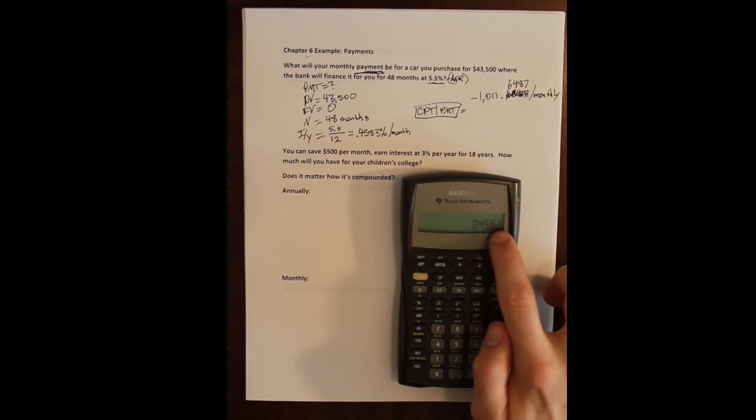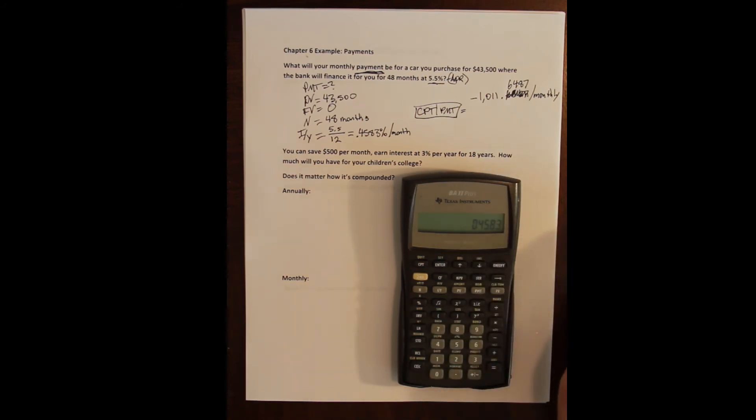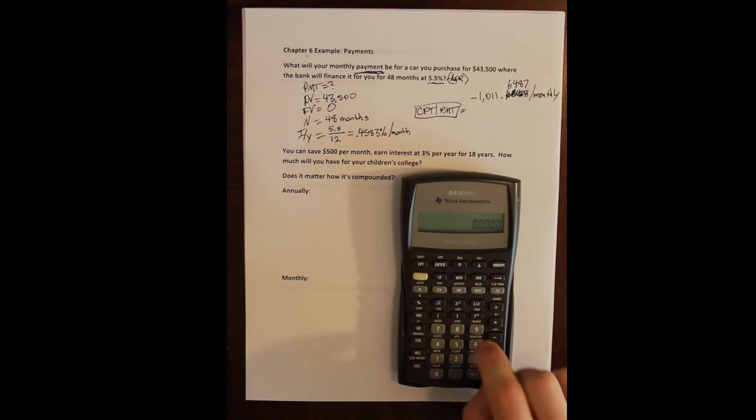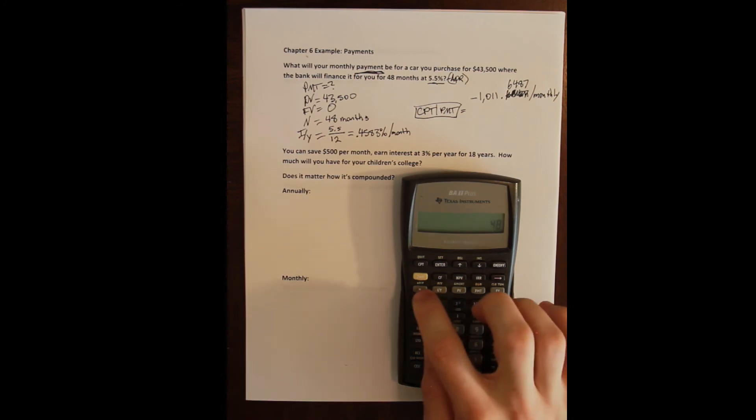So it's displaying this rounded answer for me just for brevity but it's storing all these other values. So if I were to for instance, let me clear out again, start all over. Forty three five hundred is my present value. Forty eight months is my N.